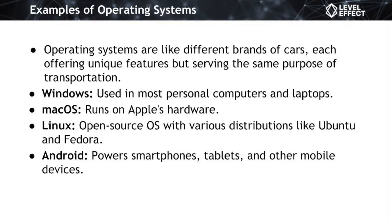Linux has a reputation as a hobbyist or technically proficient user's OS, but that's not always the case. Think of Linux as a larger family of cars, each with special features. It's unique because it's open source, meaning anyone can see and modify its code — different from Windows and macOS. Different versions, called distributions or distros like Ubuntu and Fedora, offer various flavors for specific needs. Then there's Android, the operating system for pocket gadgets like smartphones and tablets, developed by Google, versatile and flexible, powering a wide range of mobile devices.